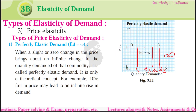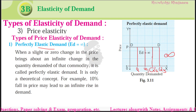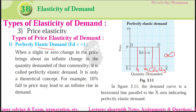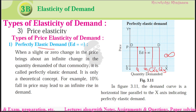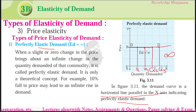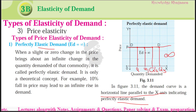This is the perfectly elastic demand — demand is perfectly elastic, going on changing, increasing. But when the price remains same, the quantity demanded is increasing. In figure 3.11, if we join these points, we get a curve. If we join these points, we get a horizontal line parallel to the x-axis. The demand curve is a horizontal line parallel to the x-axis, indicating perfectly elastic demand.